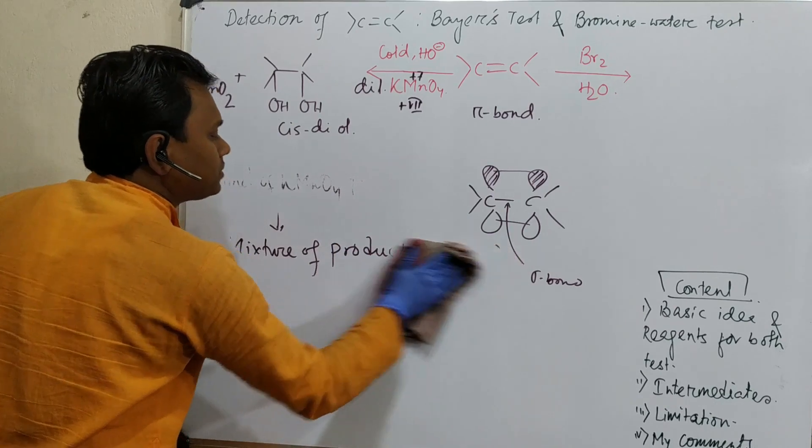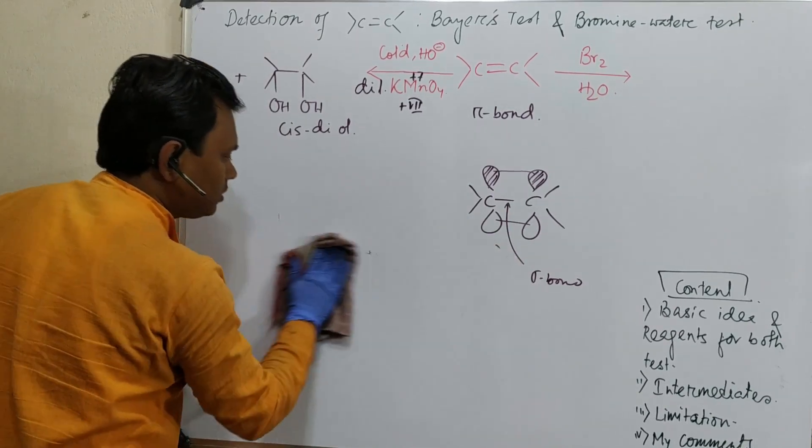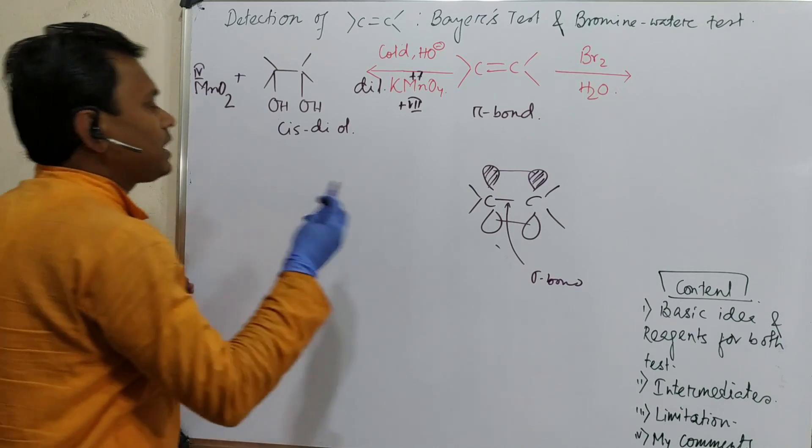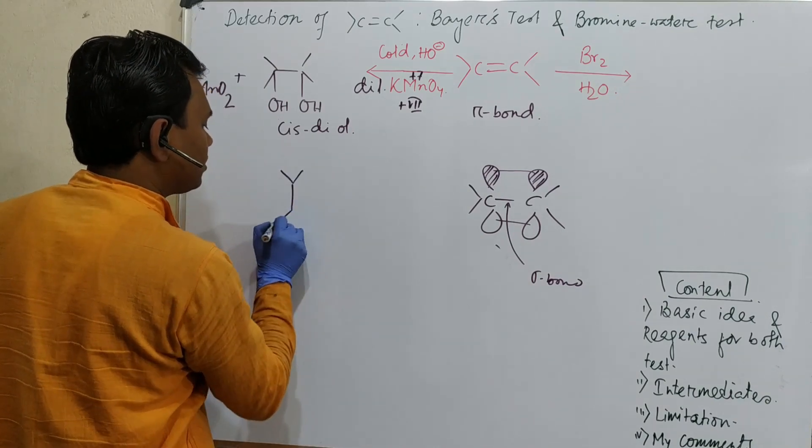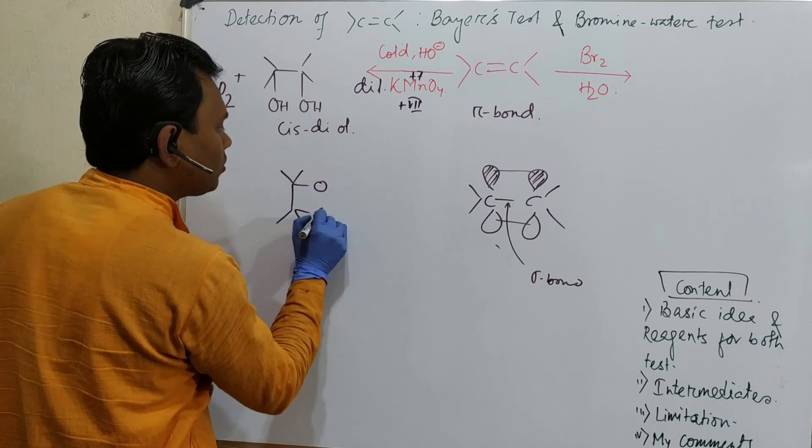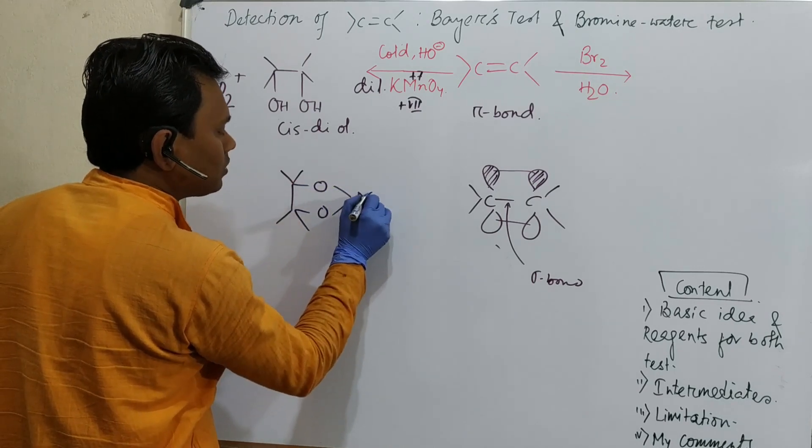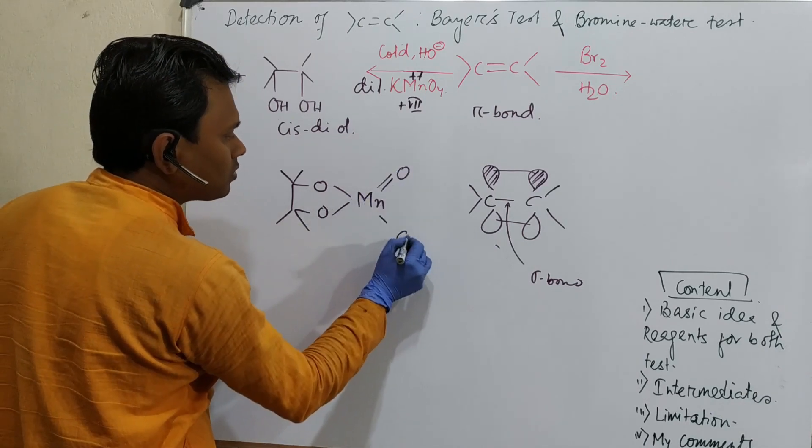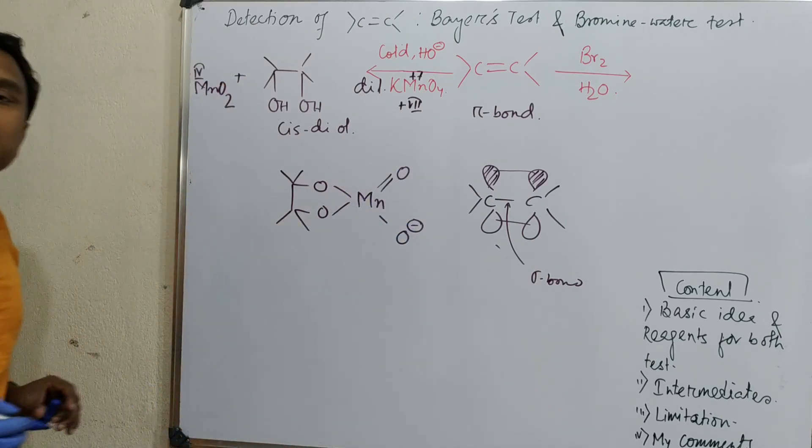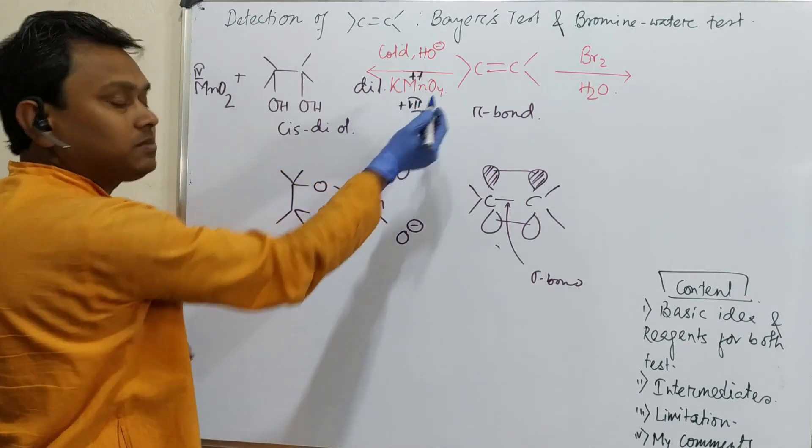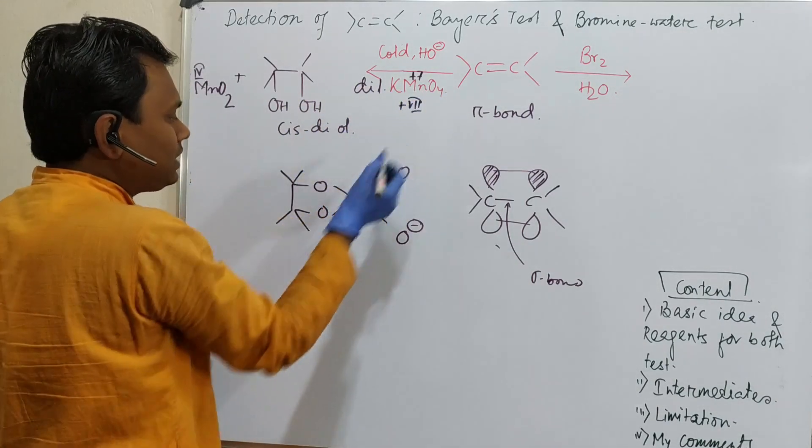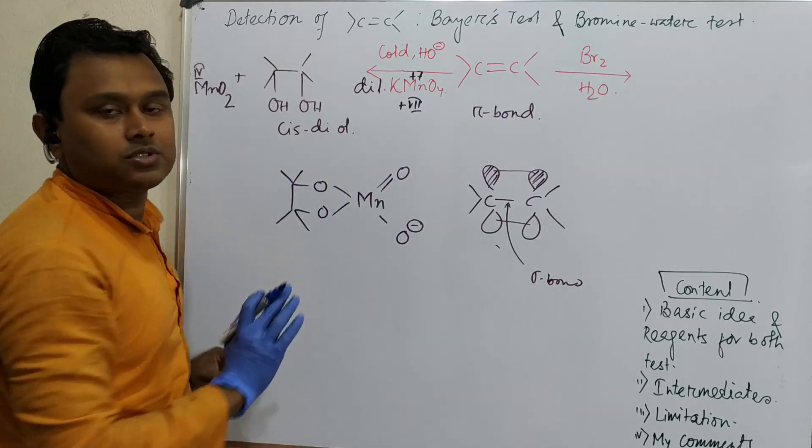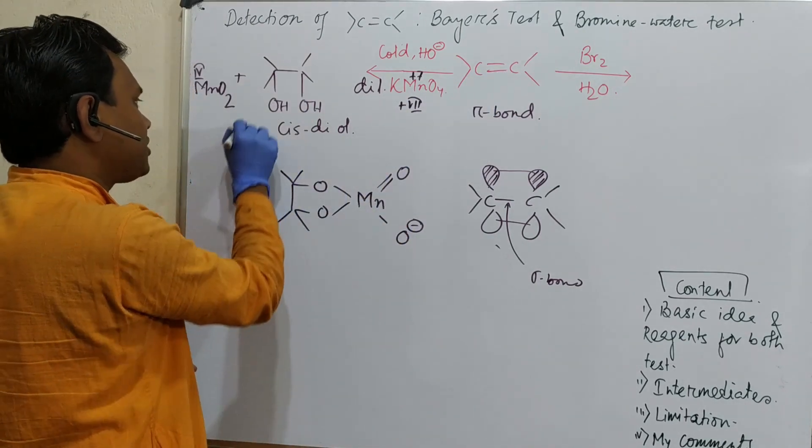Another thing is, what is the intermediate? It's a very important thing. The intermediate of this reaction is a cyclic ester, better to say. Its structure is C2-O-Mn-O4, four oxygens. Here is four oxygen. There was a double bond. The double bond is attached to oxygen. Under alkaline hydrolysis, this is actually an ester.